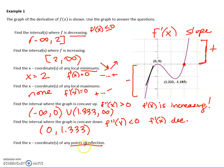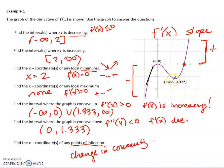Points of inflection occur when there's a change in concavity. We had a change in concavity where the derivative changed from increasing to decreasing, and where it changed from decreasing to increasing. At those two x-values — 0 and 1.33 — we have changes from concave up to concave down and then concave down to concave up. That may take a couple of viewings to get.